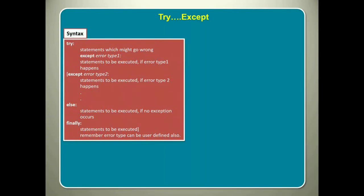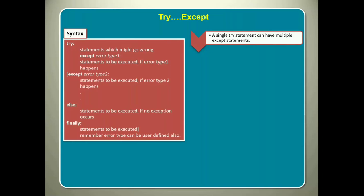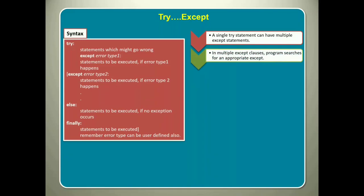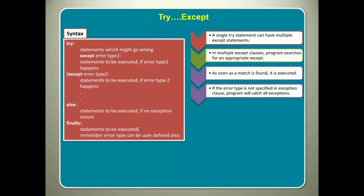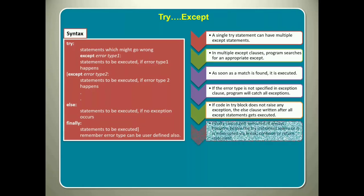The syntax of try-except statement is as follows. A single try statement can have multiple accept statements. In multiple accept clauses, program searches for an appropriate accept. As soon as a match is found, it is executed. If you do not specify the error type in exception clause, program will catch all exceptions. Moreover, if code in try block does not raise any exception, the else clause written after all accept statements gets executed. Lastly, finally clause gets executed. It always happens before the try statement leaves or it is interrupted via break, continue or return statement.